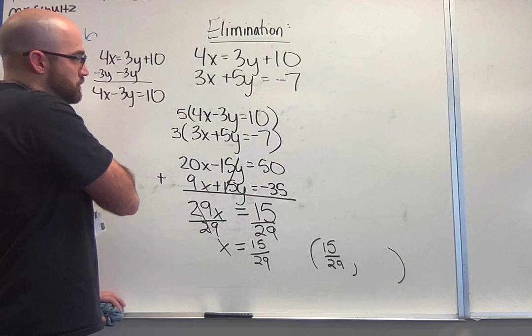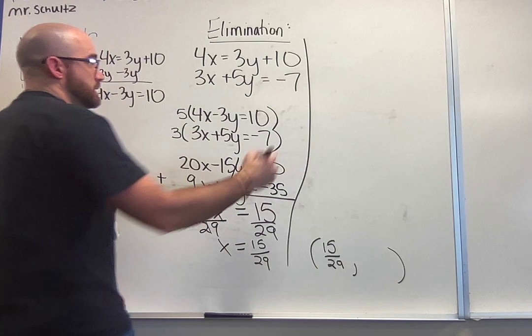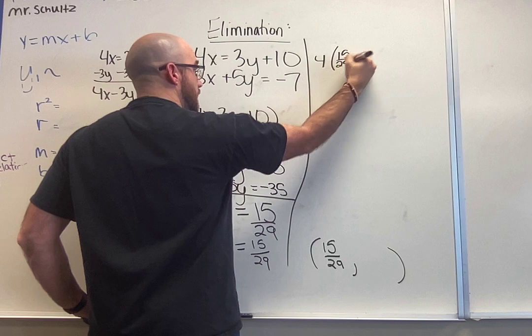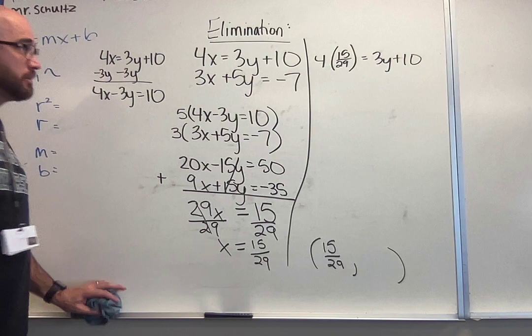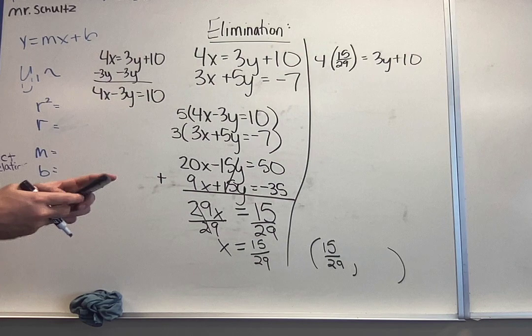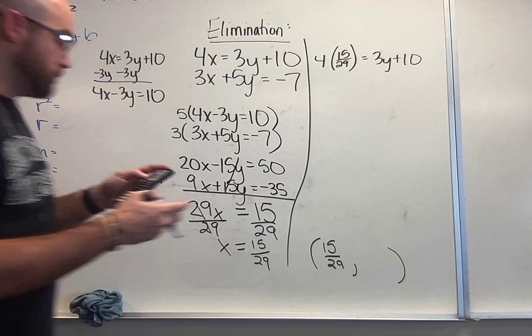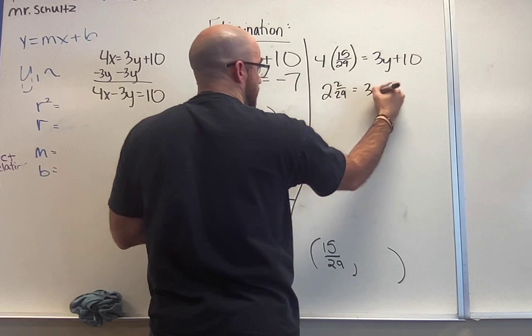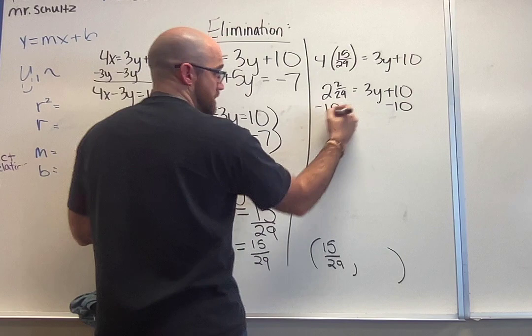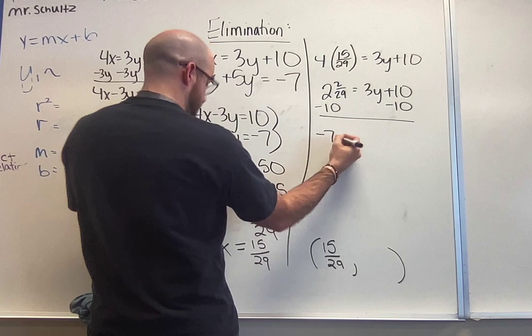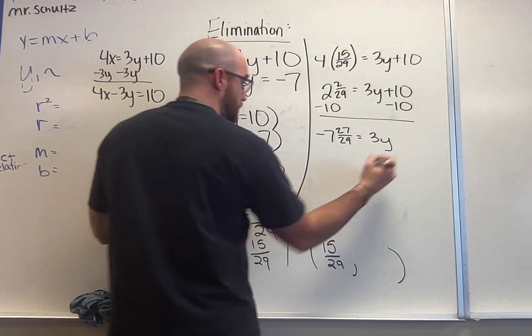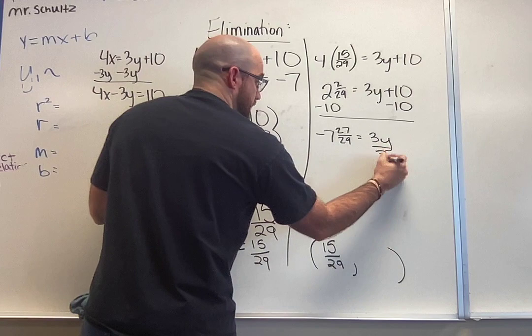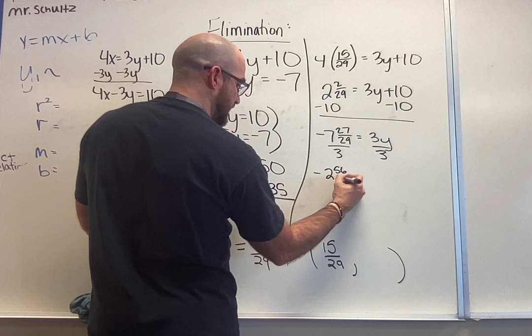Now I'm going to plug this back in. Your choice on where you want to plug it in. For this one, let's just say we plug it in the top again. So I'm going to plug this in. We have 4 times 15/29 = 3y + 10. So 4 times, I'm going to use my calculator for this one, 4 times 15 divided by 29 gets me 2 and 2/29. To get my y by itself, I'm going to subtract 10 from both sides, which gives me -7 and 27/29 = 3y. I'll divide then by 3 on both sides, and that will get us -2 and 56/87. Like I said, it's not super pretty here.